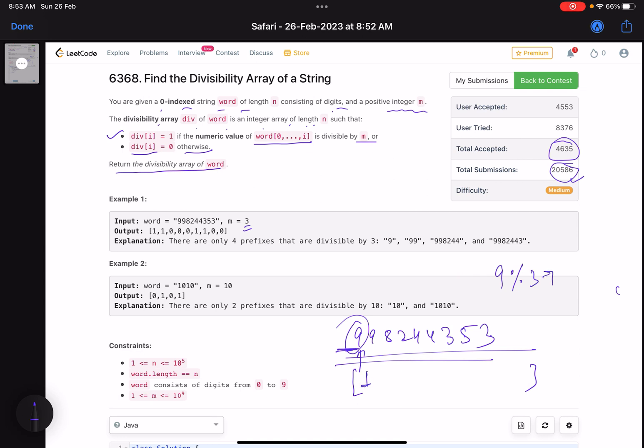What about index number 1? The prefix array is 99, so is 99 divisible by 3? Yes, put 1 again. Then come to this index, the string is 998, is that divisible by 3? No, it is not, put 0 here. Then you come here, the string is 9982, is it divisible by 3? No, put 0. Then 99824, not divisible by 3, so this is also 0. Then you come here, the string 998244 is divisible by 3.